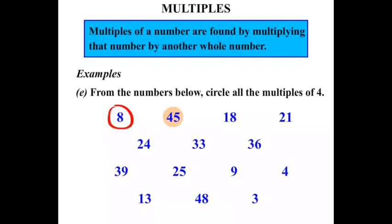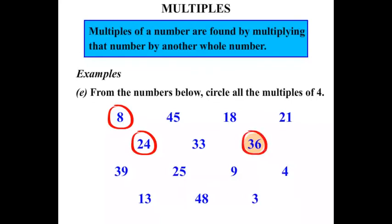45 — does 4 go into 45? No. Does 4 go into 18? No. See how important it is to know your times tables. Does 4 go into 21? No. Does 4 go into 24? Yes it does — it goes in 6 times, so that is a multiple of 4. Does 4 go into 33? No. Into 36? Yes it does. Does 4 go into 39? No. Into 25? No. Does 4 go into 9? No. Does 4 go into 4? Yes it does, so we circle that.